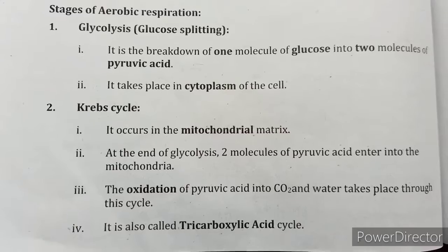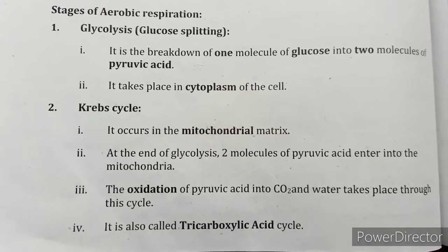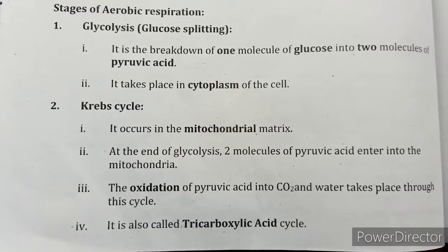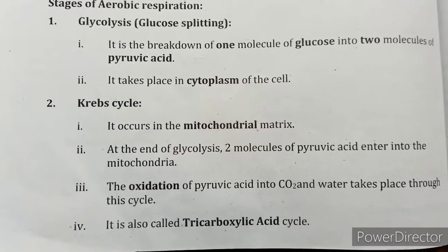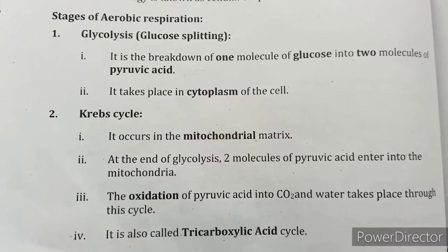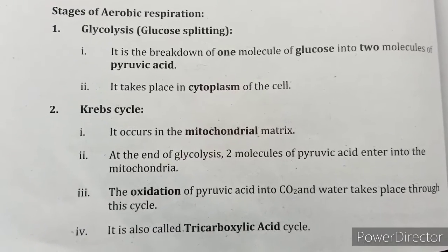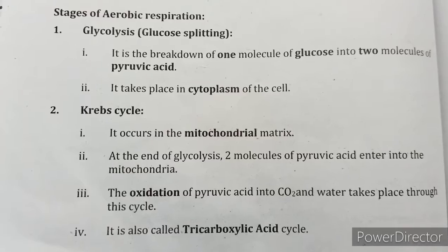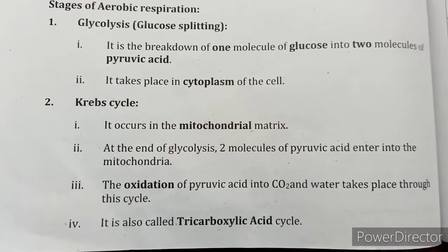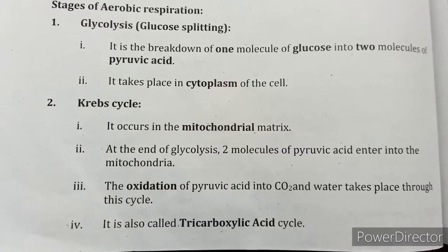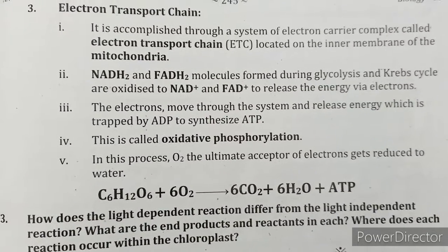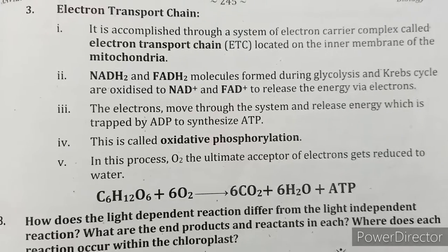Stage 2 — Krebs cycle: it occurs in the mitochondrial matrix. At the end of glycolysis, two molecules of pyruvic acid enter the mitochondria. The oxidation of pyruvic acid into CO2 and water takes place through this cycle. It is also called the tricarboxylic acid cycle.